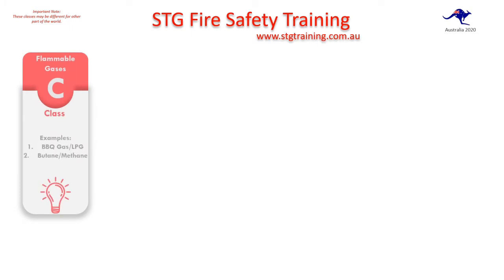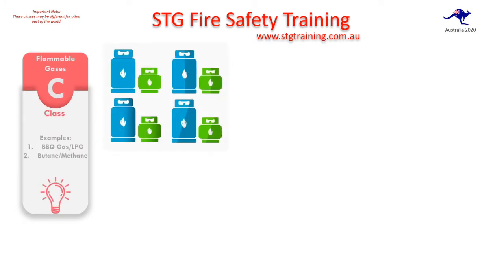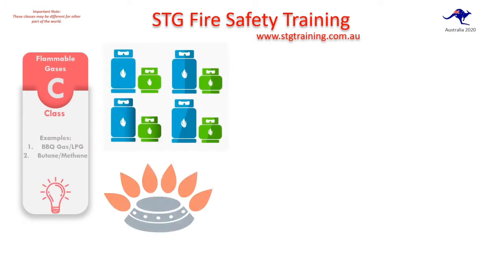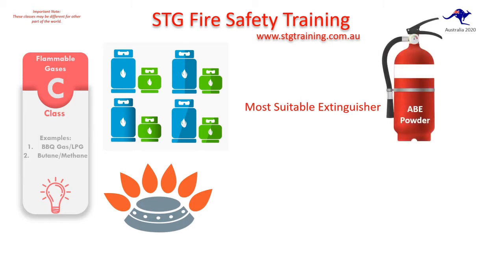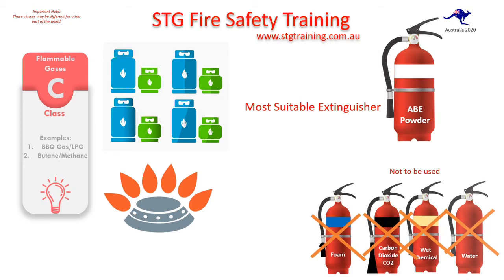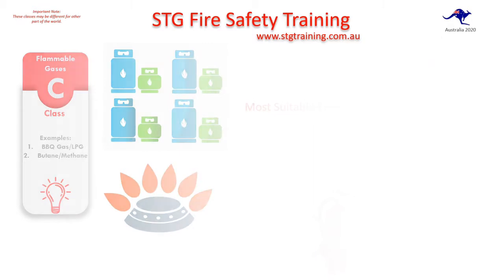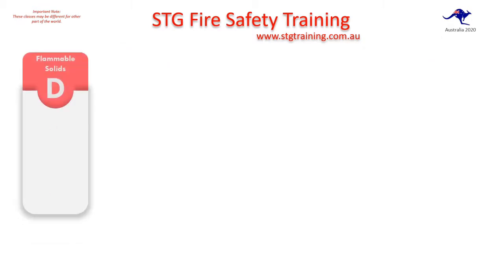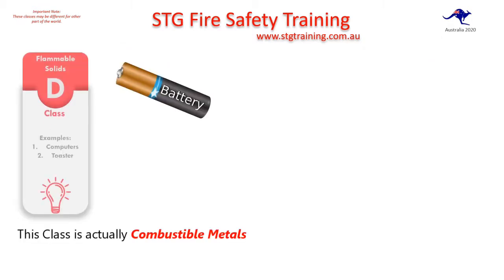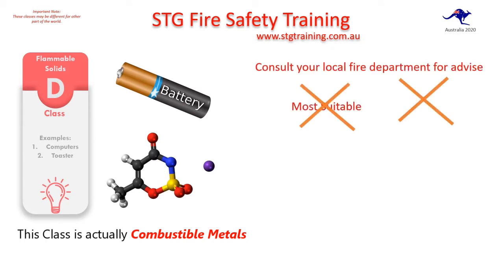The next class is Class C — your flammable gases. The most suitable extinguisher here is your ABE powder, and there are ones you shouldn't use. The next class is Class D — we don't see much of this, but it's flammable solids.